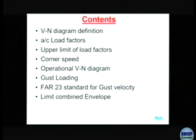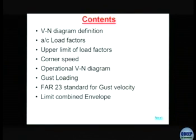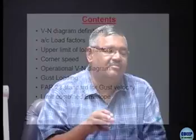The contents of this presentation are as follows: we will define the V-N diagram, then define the various load factors that occur — there are three of them. We look at how these limits are specified by the airworthiness agencies, and concepts like corner speed. There are also operational limitations on the V-N diagram, both naturally occurring and imposed, resulting in an operational V-N diagram. Finally, we look at the effect of gusts on the V-N diagram and how it changes its outer profile.